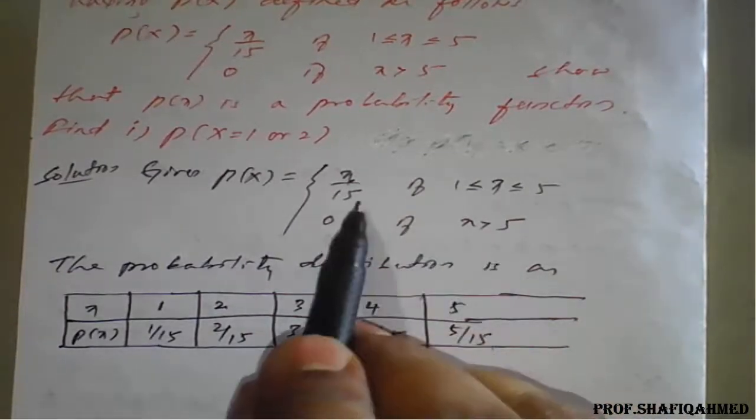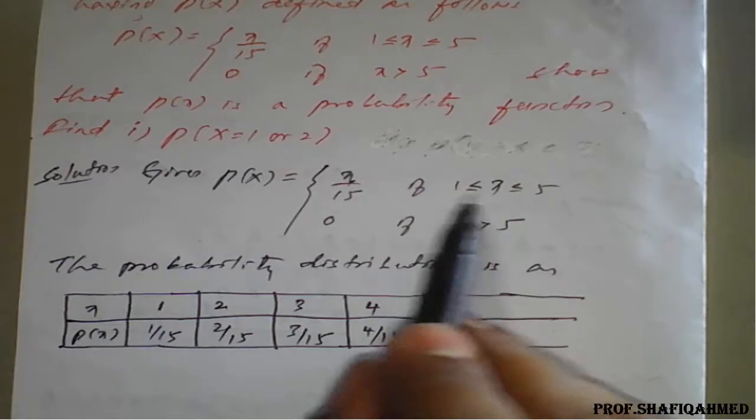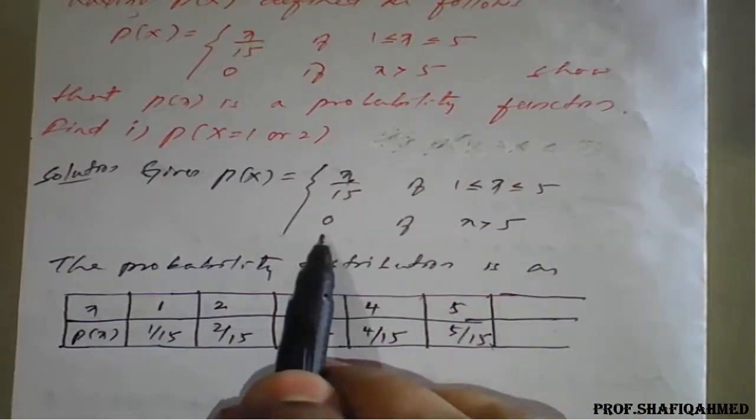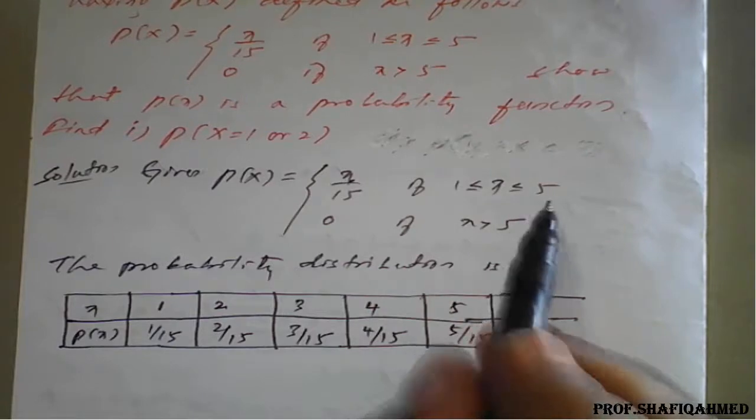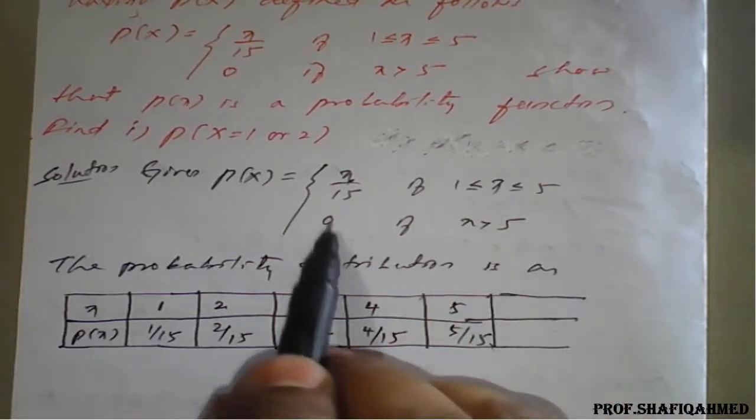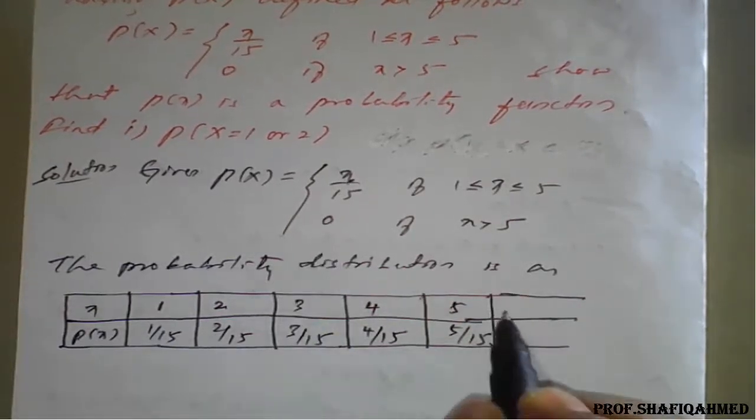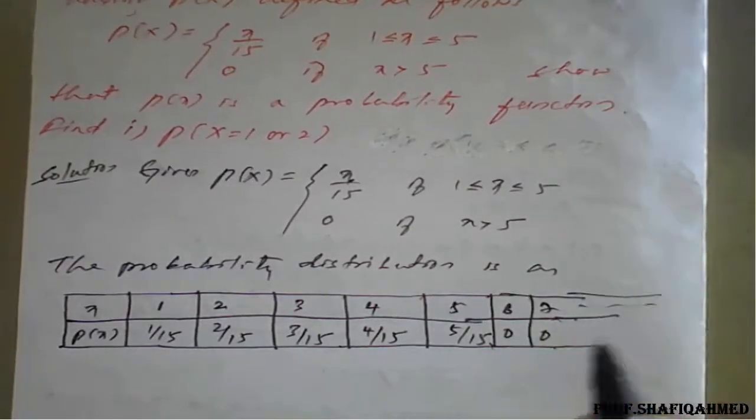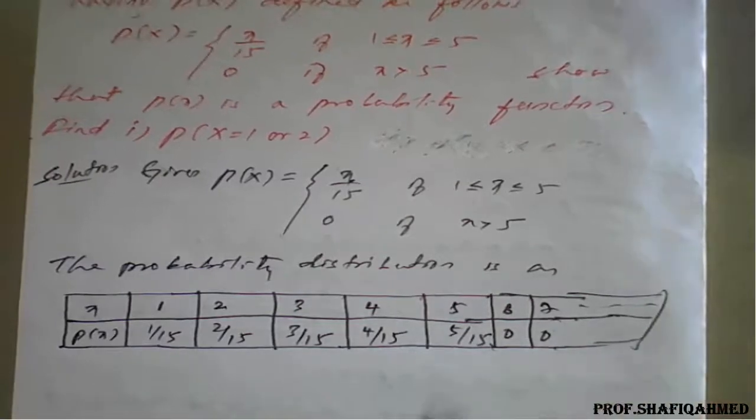But if X is 6 because range is given 1 to 5, up to 5, you can write it. But if it is more than 5, that is 6, 7, 8, 9 for all values the result will be 0. For 6, it will become 0. For 7, it will become 0. So the result will be 0 only. Up to 5, you will get 5 upon 15 here.